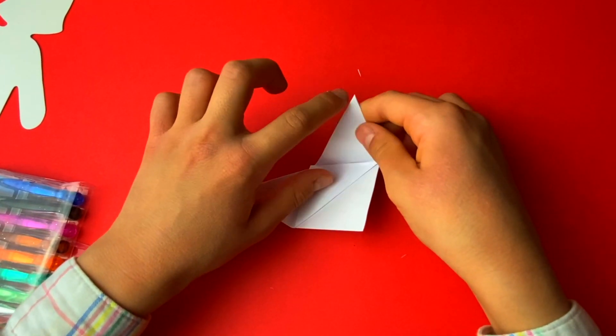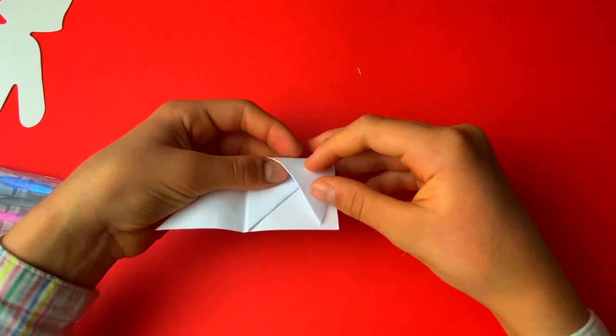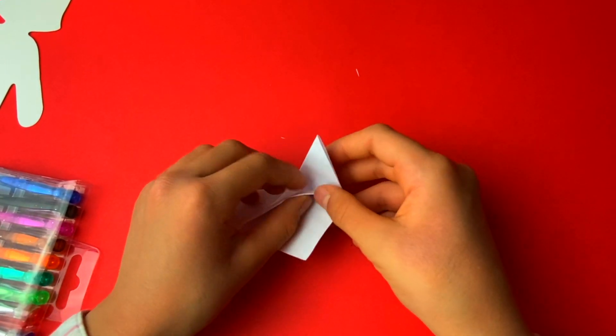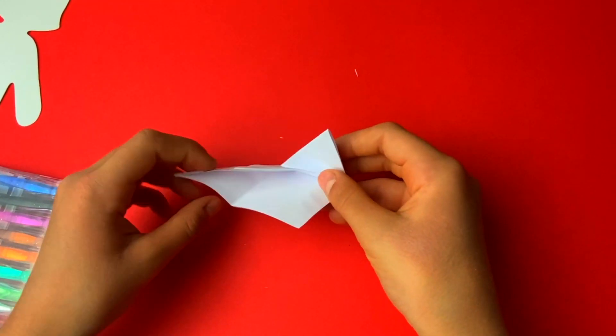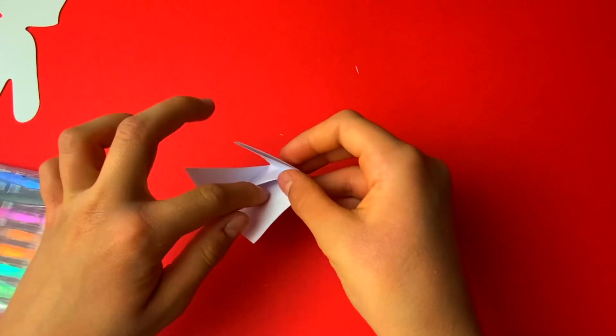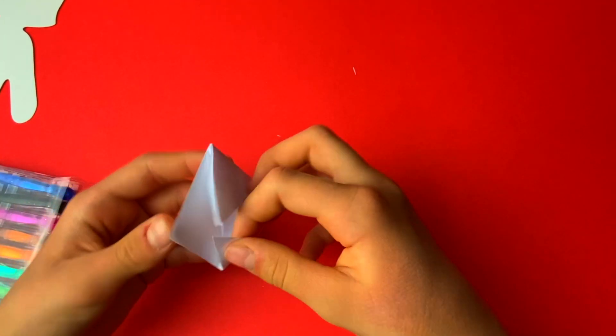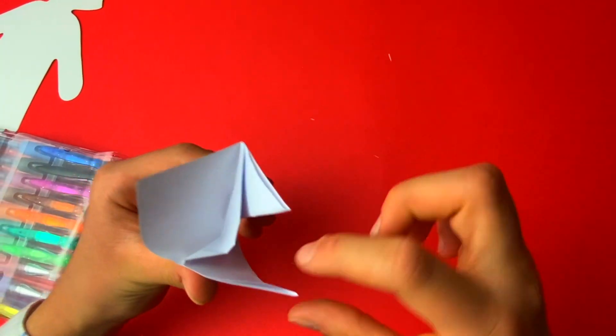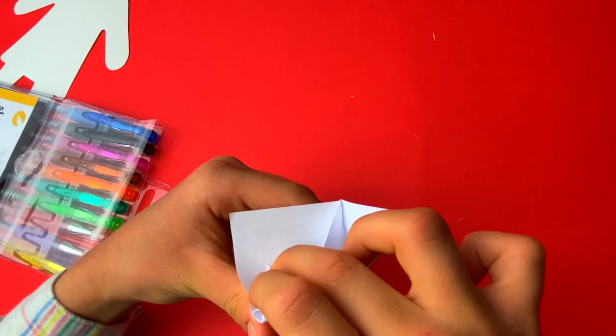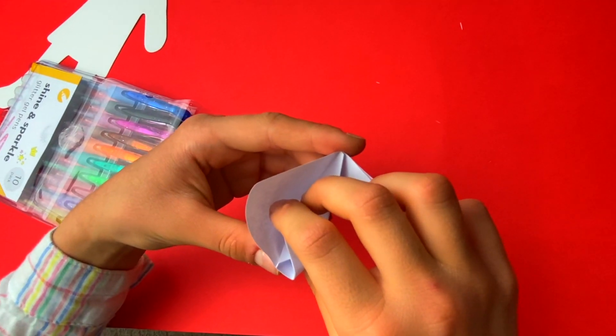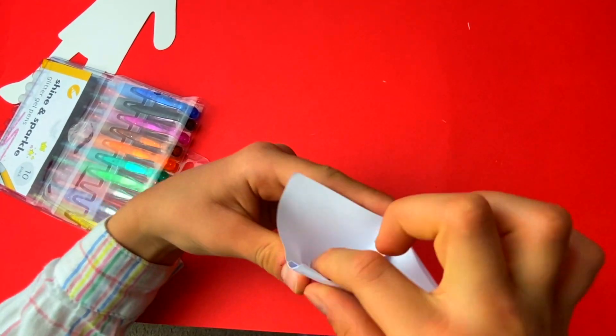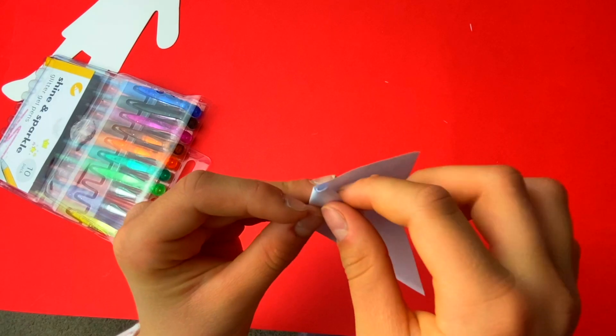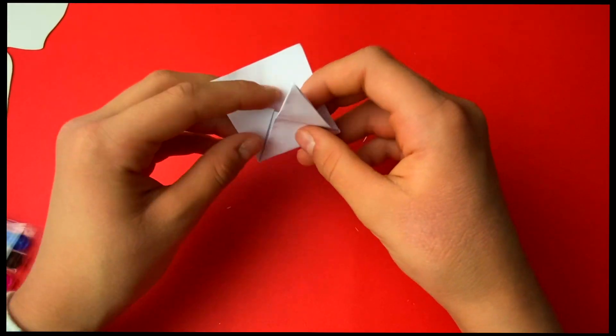So we get these sides, these corners, and we fold them in, fold them inside this, like the pocket. And now, and now I'm going to put the other side inside.